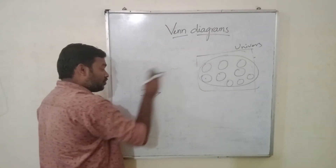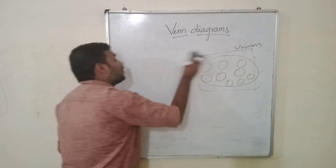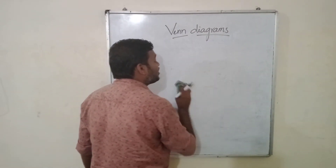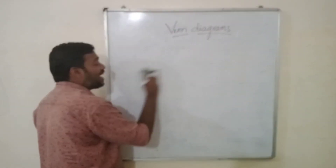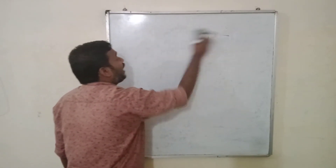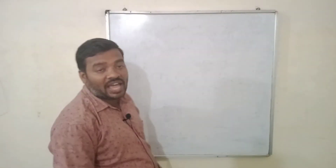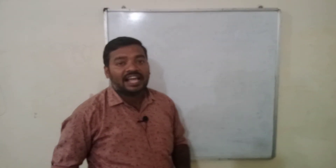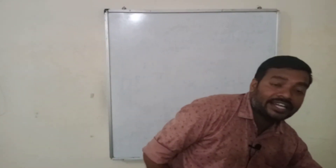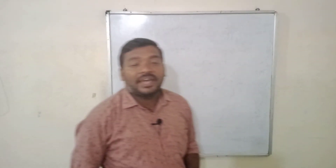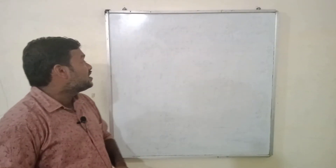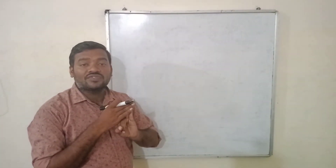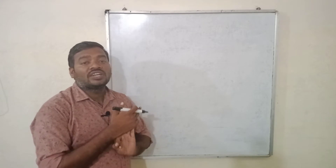Let us go for basic operations on sets, which we discussed in the previous class, now with Venn diagrams. In the previous class we hadn't discussed Venn diagrams, but in this class we shall discuss Venn diagrams for basic operations on sets — that is union of sets, intersection of sets, and difference of sets.